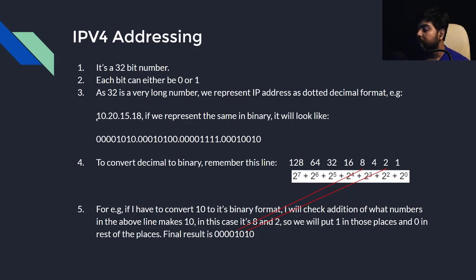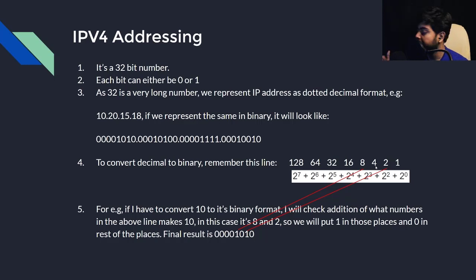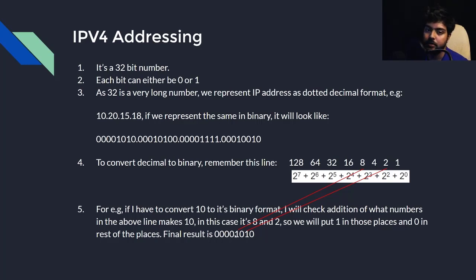Suppose I need to convert the number 10 to its binary format. I will find the combination of numbers whose addition equals 10. In this case, 8 plus 2 equals 10, so I put 1 in the place of 8 and 1 in the place of 2, and 0 in all other places. This is the binary format of 10.